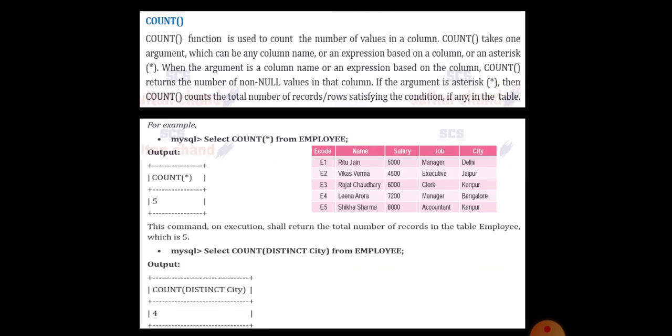The COUNT function is used to count the number of values in a column. It takes the argument which can be any column name or an expression based on the column or an asterisk. When the argument column is a column name or an expression based on the column, it returns the number of non-null values in that column.